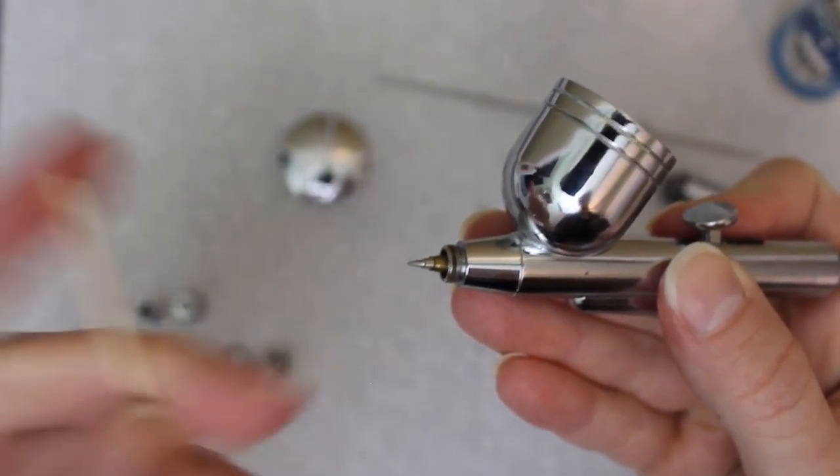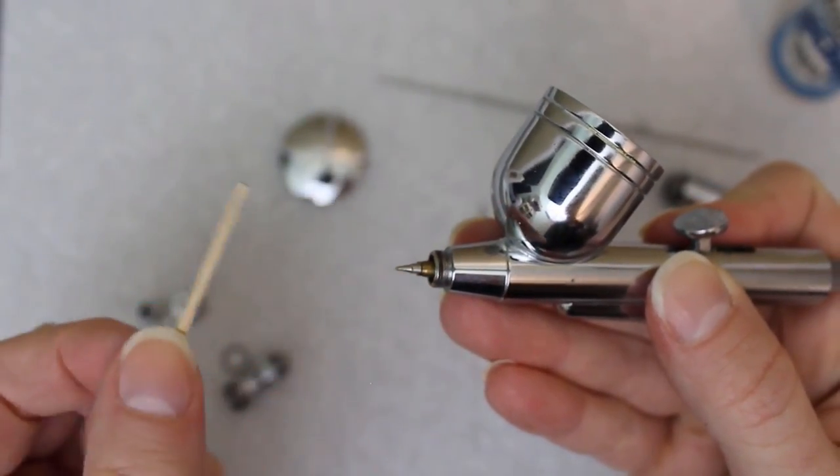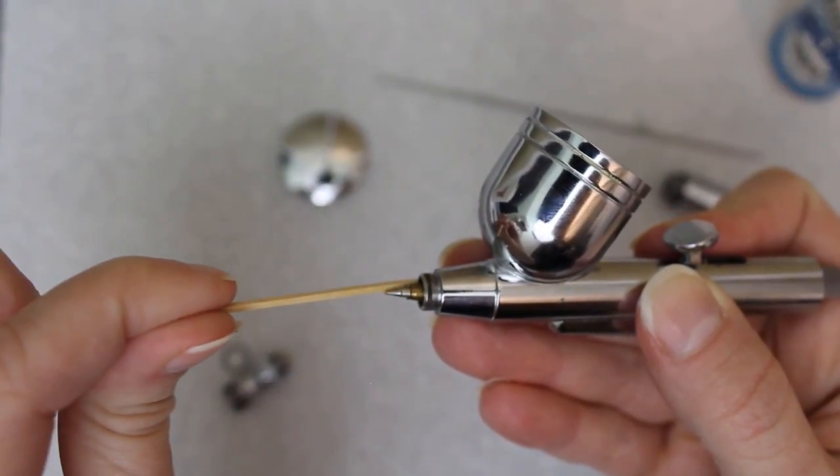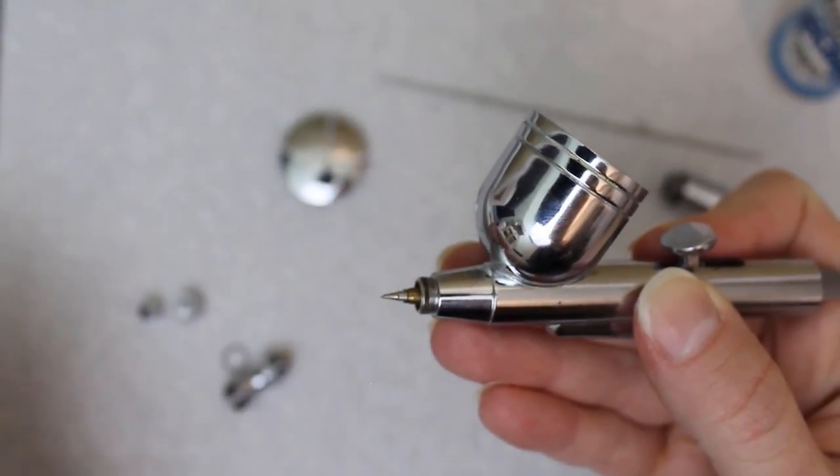If it happens, get a wooden toothpick and insert it into the end of the airbrush. Push just until it's snug, and then twist counterclockwise to unscrew the broken threads and remove them.